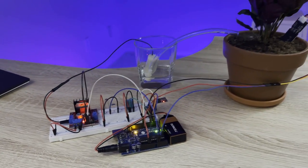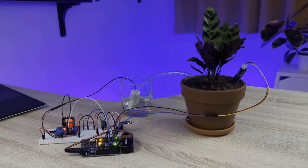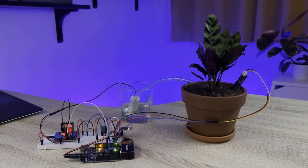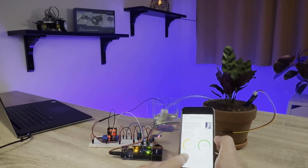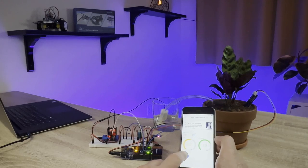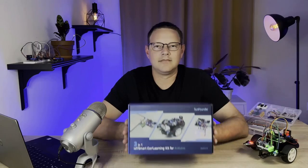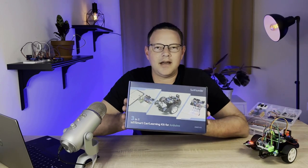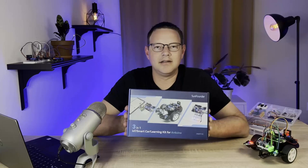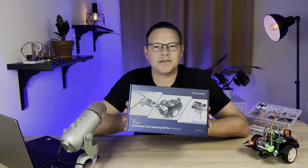And build a plant monitor that tracks the temperature, humidity, light intensity, and soil moisture and displays it on your smartphone, so you can keep your plants watered remotely. It's a super cool kit, and I had lots of fun building all the projects in it. So click the link in the description below to order the kit from SunFounder.